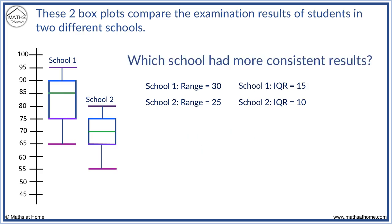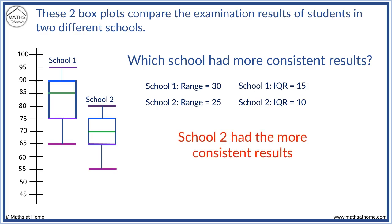Which school had the more consistent results? If something is more consistent, it is less spread. We choose the school with the lower range and interquartile range. School 2 had the more consistent results.